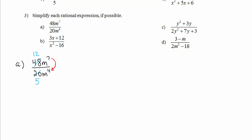We begin the subtraction in the numerator, so that's where our result goes. m to the 3rd goes in the numerator. So our answer is 12m to the 3rd divided by 5.